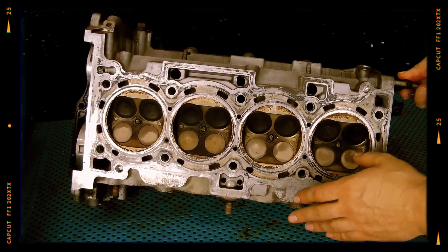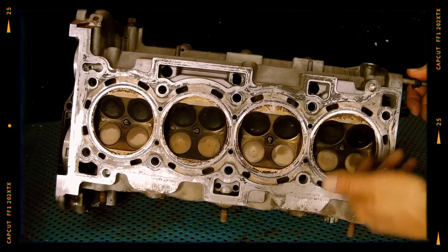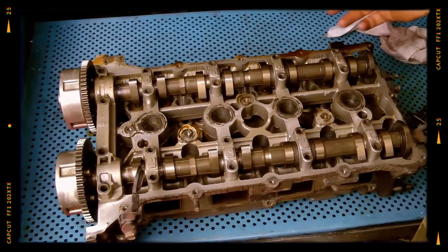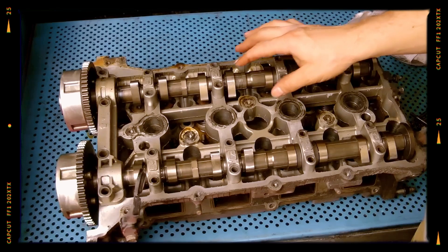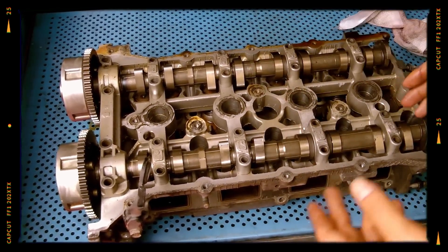An alloy DOHC head carries four valves per cylinder activated by shimless bucket lifters. No hydraulic lash compensation means clearance checks every 60,000 miles.